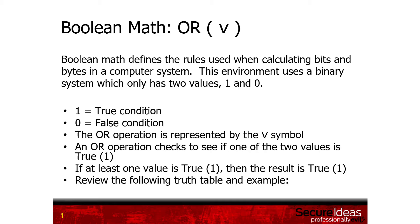So to recap, Boolean math basically uses a binary system and only has two values. It's either going to be a 1 or a 0, where 1 equals a true condition and 0 equals a false condition.